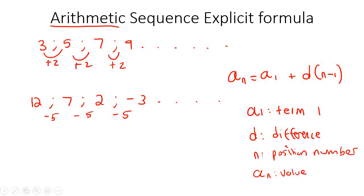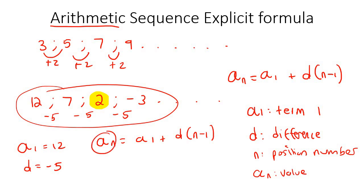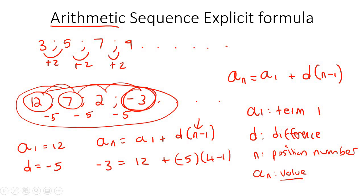So, for example, in this sequence over here, a1 is 12 because that's term 1. The difference is negative 5 because that's how much we're changing by. If I had to then choose this one over here, then if you had to use the formula, then an would be the 2 because it's the value. a1 would be 12. The difference would be negative 5. n, which is the position, would be position 1, position 2, position 3. So you'd put a 3 over there. Hope that makes sense. Let's try another one quickly. So let's say, for example, I chose this one over here. Then a1 would be 12. The difference would still be negative 5. The position would be 1, 2, 3, 4. And the value would be negative 3. So can you see where each thing goes?